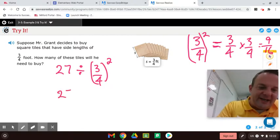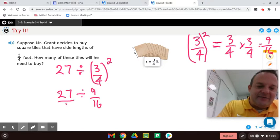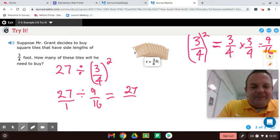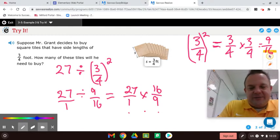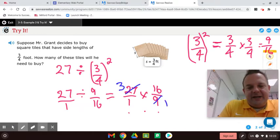So now we have 27 divided by nine-sixteenths. It's 27 over one. Now we have to do LMR. Left side, leave it. The dividend stays the same. And then you multiply by the reciprocal of the divisor. Left side, leave it. Middle multiply. Right side, reciprocate. And now you will notice that you can cross-cancel. What is the greatest common factor of 27 and nine? That's right, nine. So divide by nine and divide by nine. And now you get three times 16 is 48 over one. So just 48 tiles.